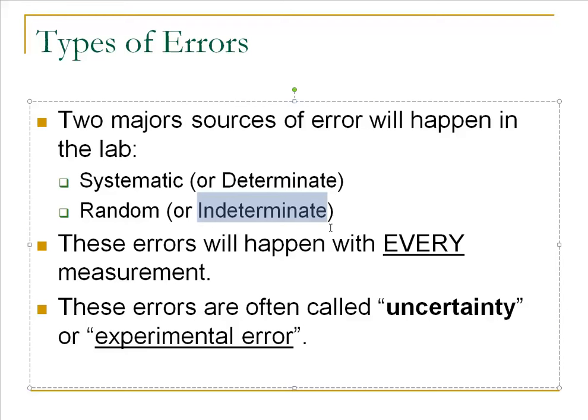Systematic errors are called determinate because they're very easy to determine where they happen. We know there is perhaps a mistake in the method we're following — a mistake we have picked up on and done every single time. So in the end it kind of washes out, but there's something there that we can pinpoint and say, this is the problem, we know what's happened.